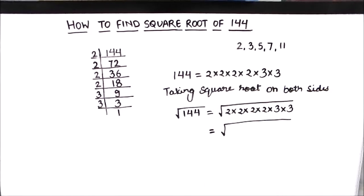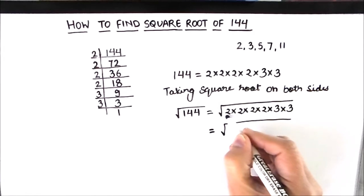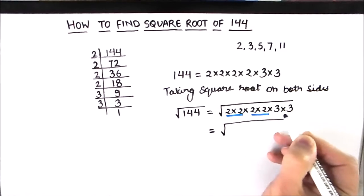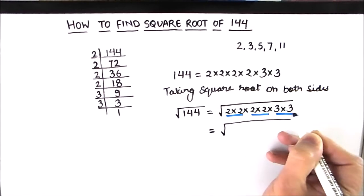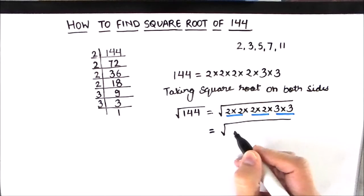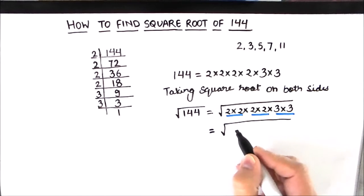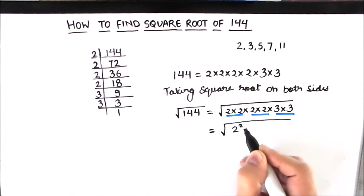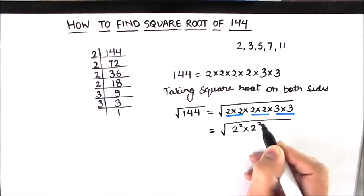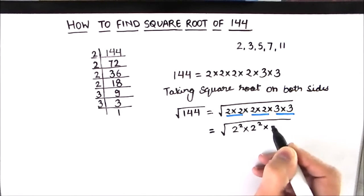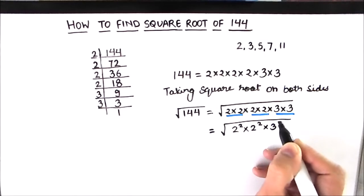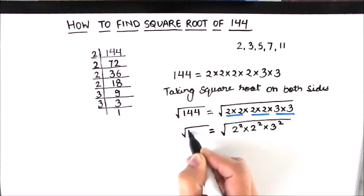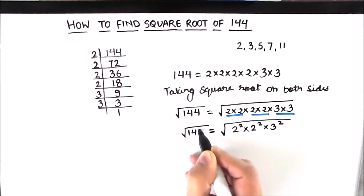As we are finding the square root, we are going to take pairs of the numbers and write it in exponential form. So this will be 2 squared times 2 squared times 3 squared, equal to the square root of 144.